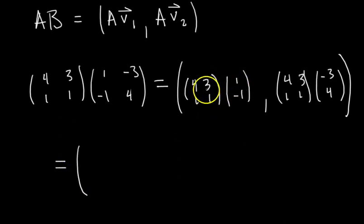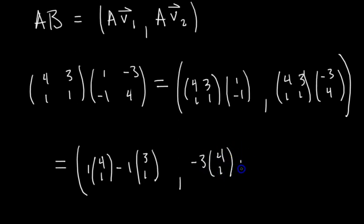So this whole thing is our matrix AB. And you know how to do this. This video is about matrix multiplication, but you already know how to do a big matrix times a vector. This is like old stuff, easy stuff. This matrix times this vector is a linear combination of the columns of this matrix, the weights of the entries in this vector. So this first column is 1 times 4, 1 minus 1 times 3, 1. And then over here we have negative 3 times 4, 1 plus 4 times 3, 1.